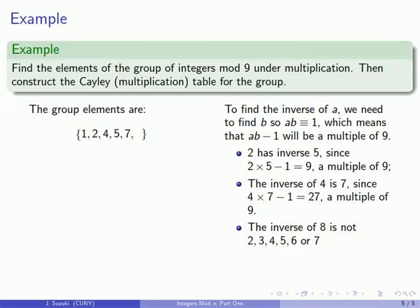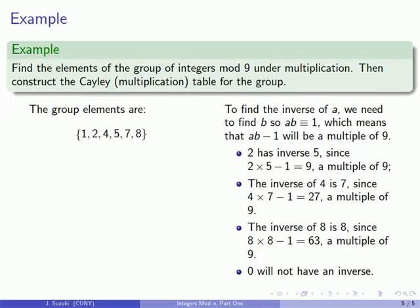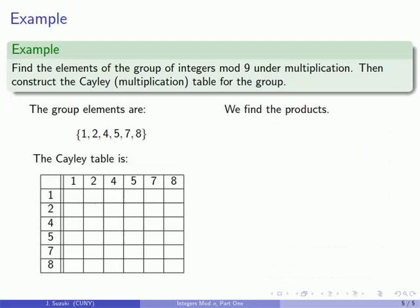We already know 7 is in the group because it's the inverse of 4. 8 can't have inverse 2, 4, 5 or 7. What about 8? Well we find that 8 times 8 minus 1 is 63 and that is in fact a multiple of 9 and so 8 is its own inverse. And finally 0 which is a possible remainder can't have an inverse because 0 times anything minus 1 will never be a multiple of 9. And so let's go form our Cayley multiplication table.